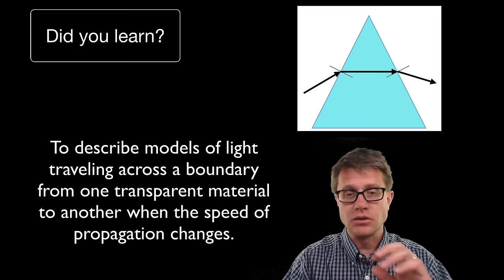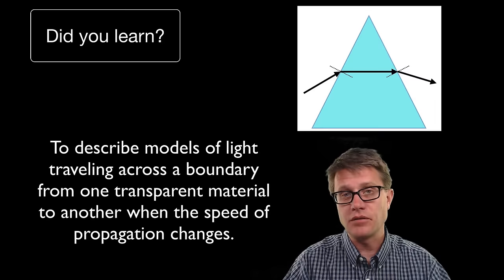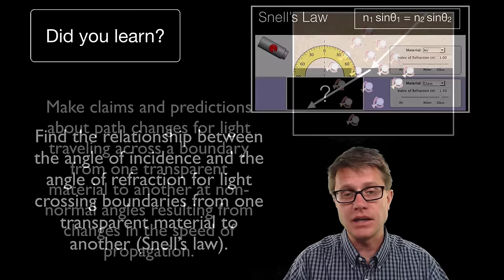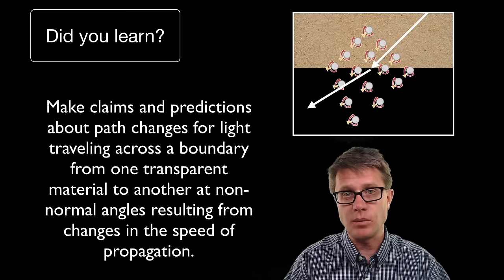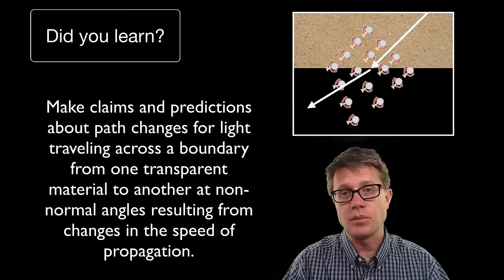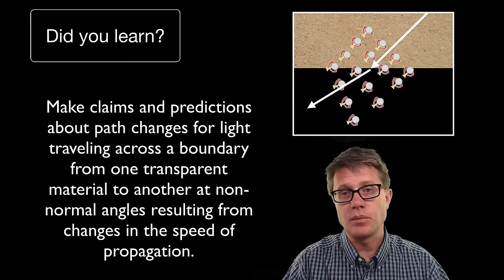Can you describe models of light traveling from one boundary into another when the speed of propagation changes? Can you find the relationship using Snell's law and make predictions? The go-to analogy is the marching band — they keep the distance between them the same, and depending on which one starts to speed up or slow down first, we get refraction. I hope that was helpful.